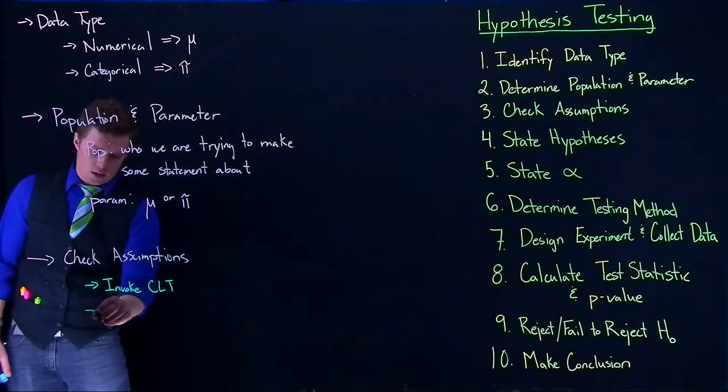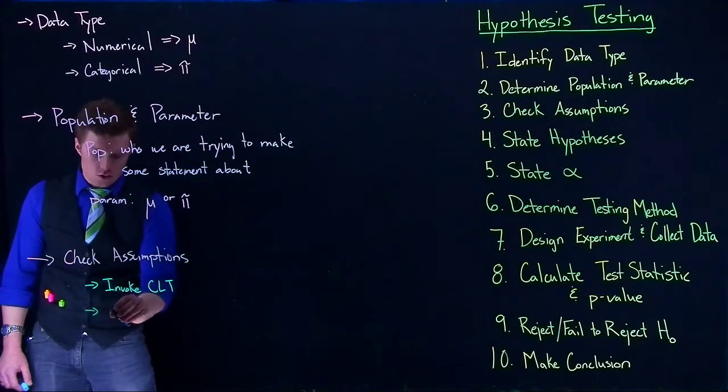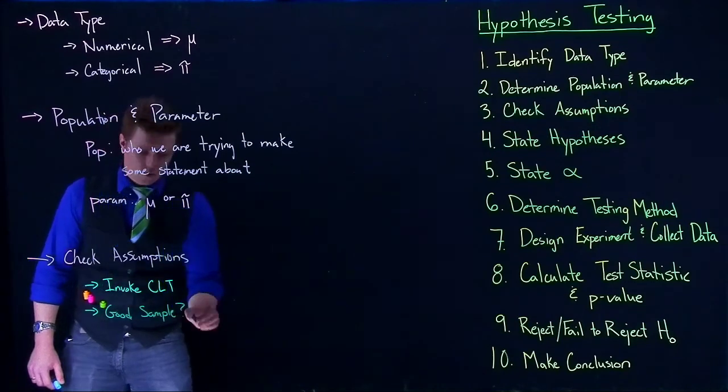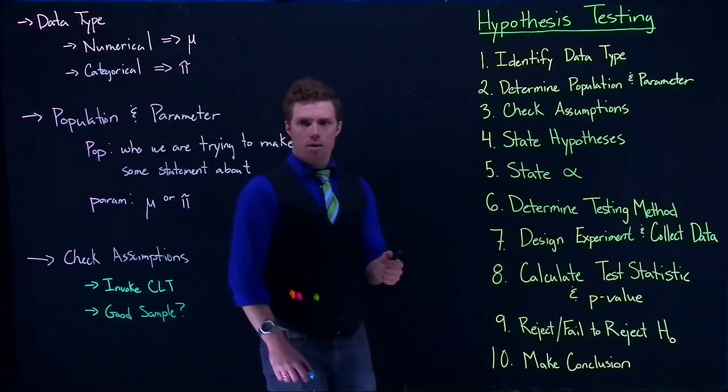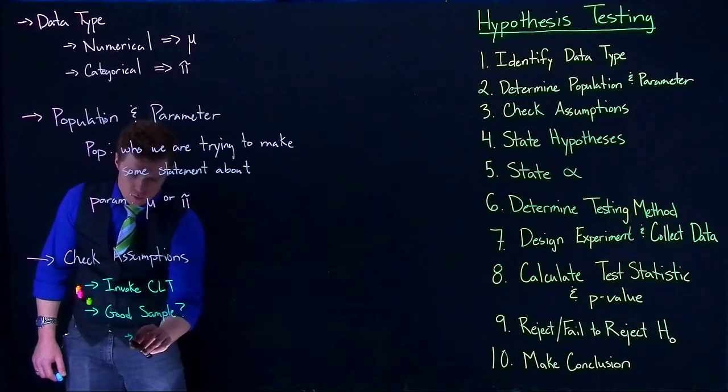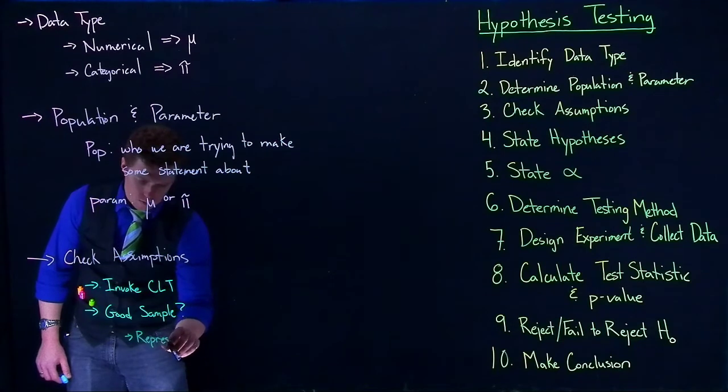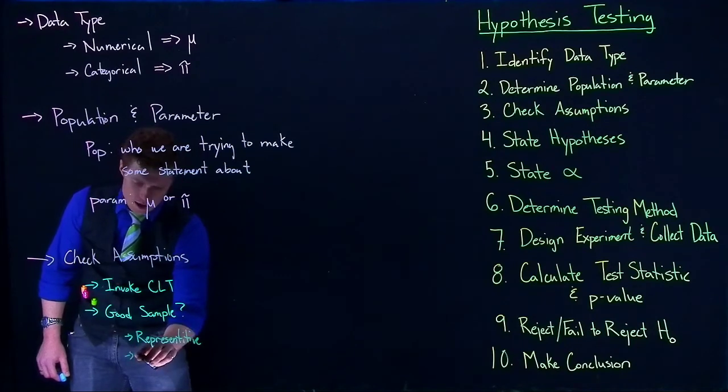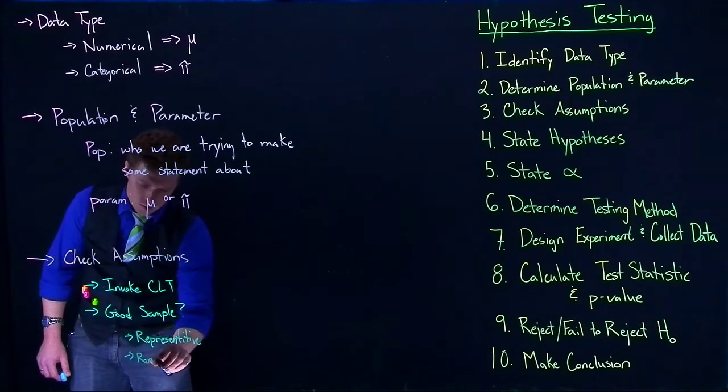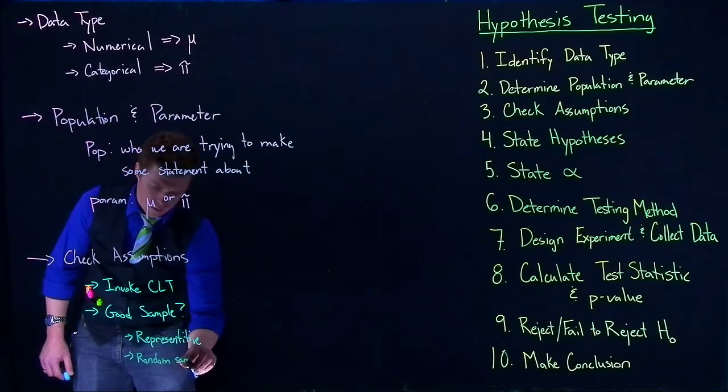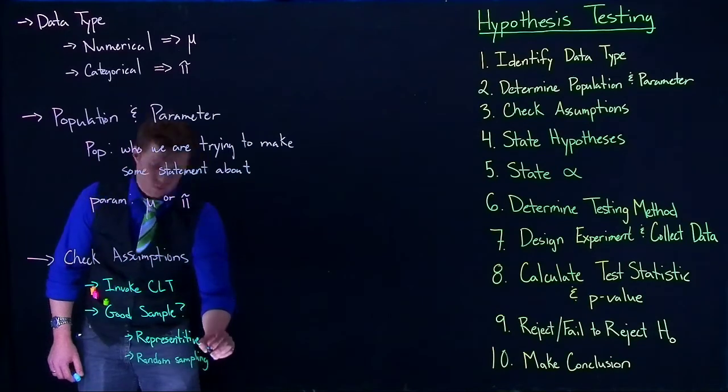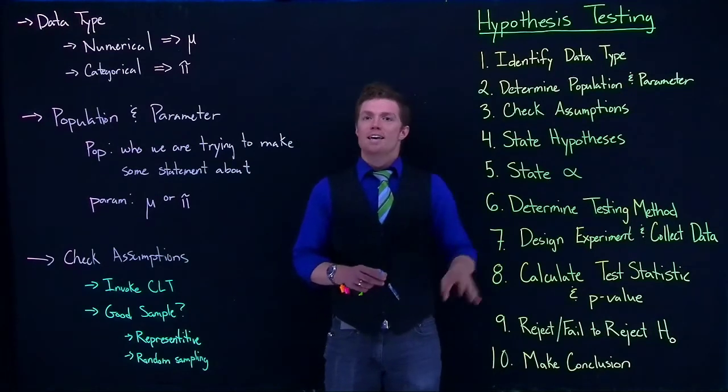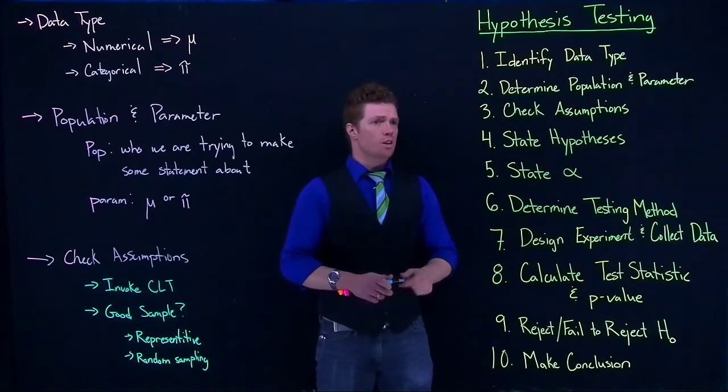Another good thing that we should check is: do we have a good sample? And so what actually makes a good sample? Well, it needs to be representative, and usually we get that by random testing or random sampling. And we'll go into a little bit more detail of what exactly random sampling and random testing looks like inside of hypothesis testing.